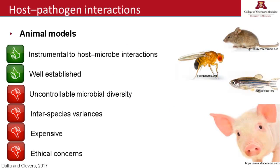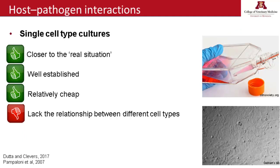What have we been using to understand that? For many years we have been using animal models. They are instrumental to understand these relationships and they are well established. But in many cases we use rats or mice as a model for disease. How do we control microbial diversity? How do we interpret interspecies variances? We also know how expensive and labor-intensive in vivo trials can be, and they raise a lot of ethical concerns. To overcome these limitations, single cell type cultures have been widely used. They are close to the real situation, they are well established and relatively cheap, but they lack the relationship between all the different cell types in the intestine.